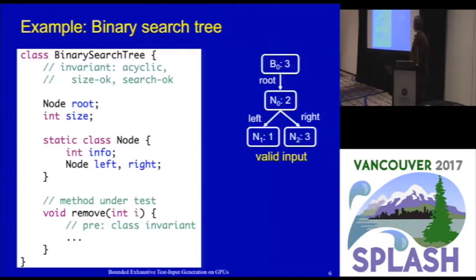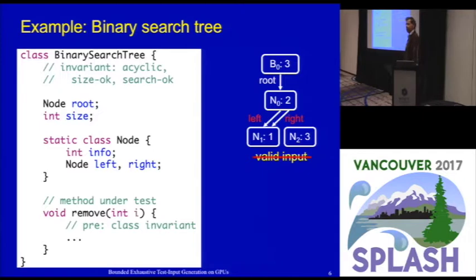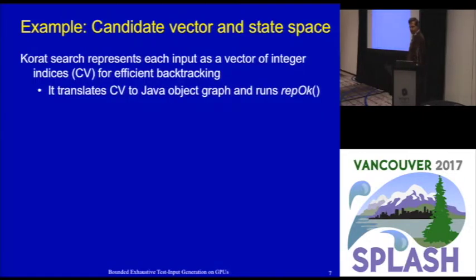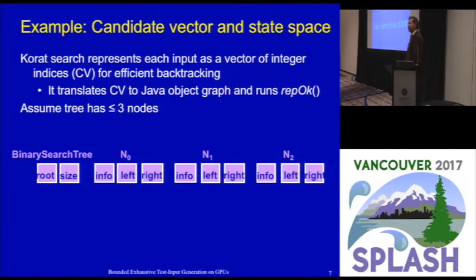The precondition in this case is simply the class invariant. We would like to create inputs such as a valid binary search tree with three nodes having values 2, 1, and 3 in correct search order. An invalid input for this remove method would be one where nodes are shared along left and right, which violates the precondition. Internally, the standard Korath search represents candidate inputs using a vector of integer indices for efficient backtracking, translating a candidate vector to a Java object graph and running RepOK on it.